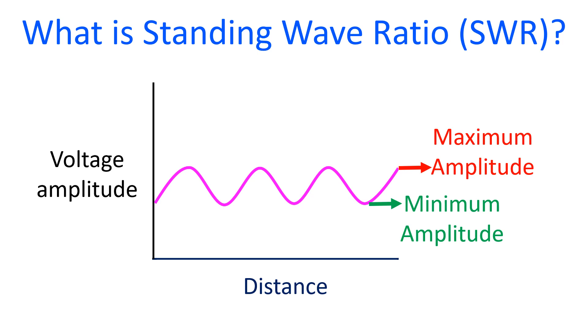SWR can be expressed in terms of voltage, known as voltage SWR, and current, known as current SWR. Usually it is the voltage SWR that is measured using an SWR meter.